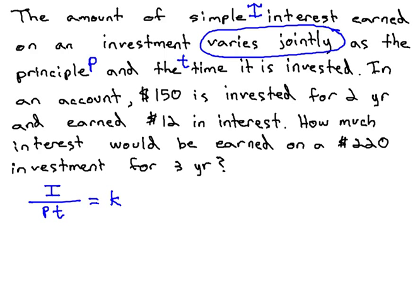Now that we have a formula, we're ready to find the constant of variation using known values. We know $150 is invested, that's the principal. For two years, that's the time, earns $12 in interest. That's the interest.